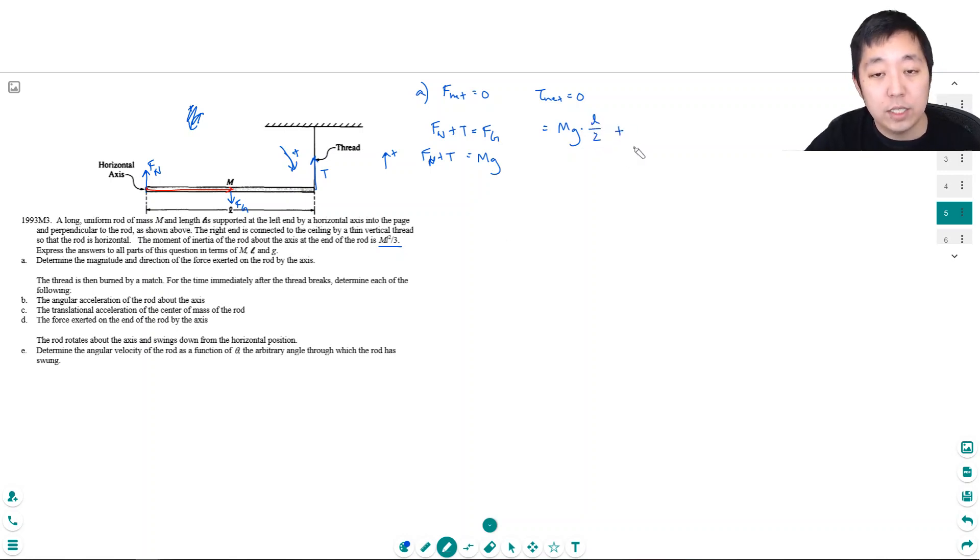Plus, okay, and that's the positive torque. The tension is doing negative torque because it's pulling it in a way that it's trying to pull it counterclockwise in the negative direction. So I would do minus T times l equals zero. So Tl is equal to mgl over 2. The l's cancel, so T is equal to mg over 2.